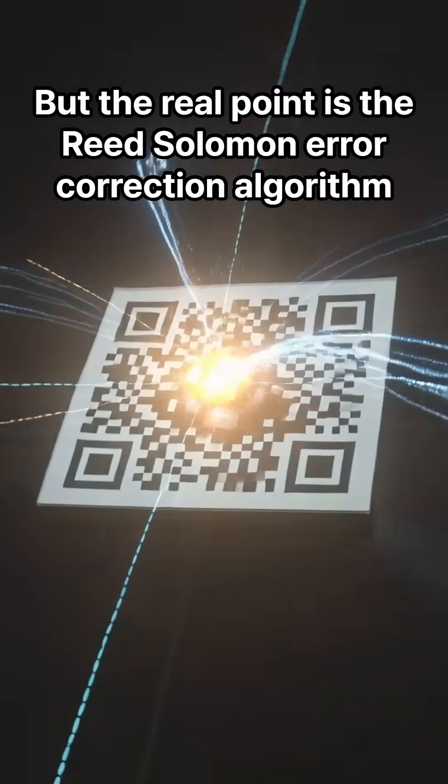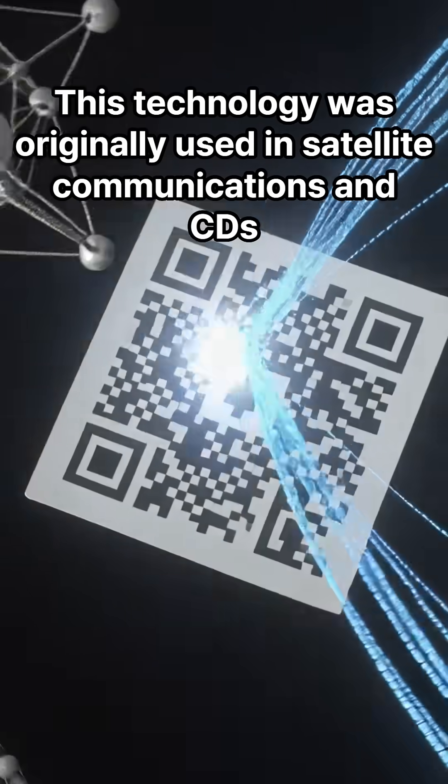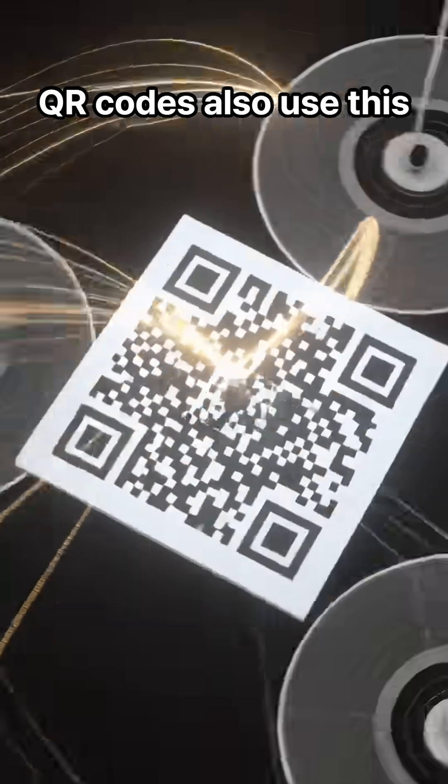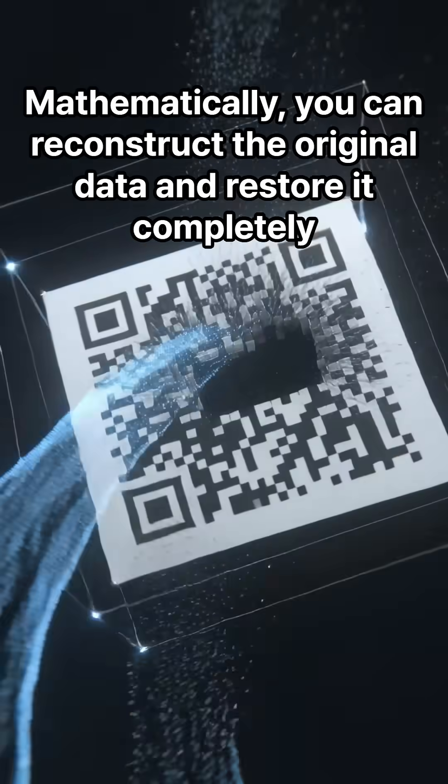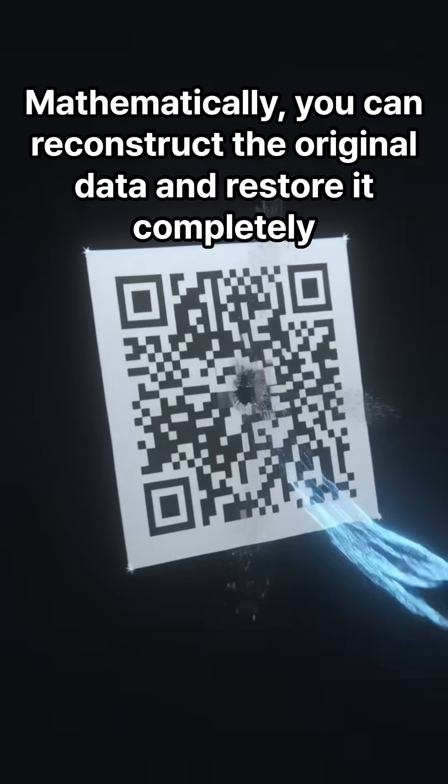But the real point is the Reed-Solomon error correction algorithm. This technology was originally used in satellite communications and CDs. QR codes also use this. Thanks to this, even if up to 30% of QR codes are hidden, you can mathematically reconstruct the original data and restore it completely.